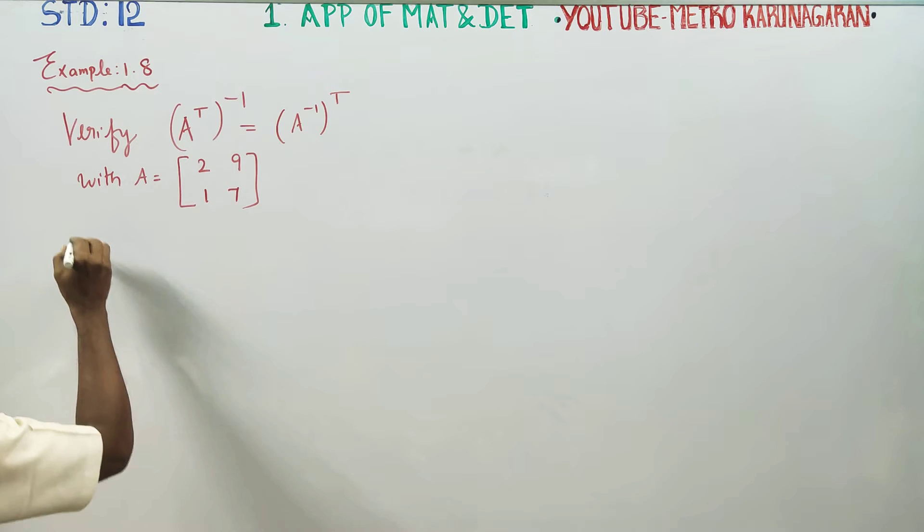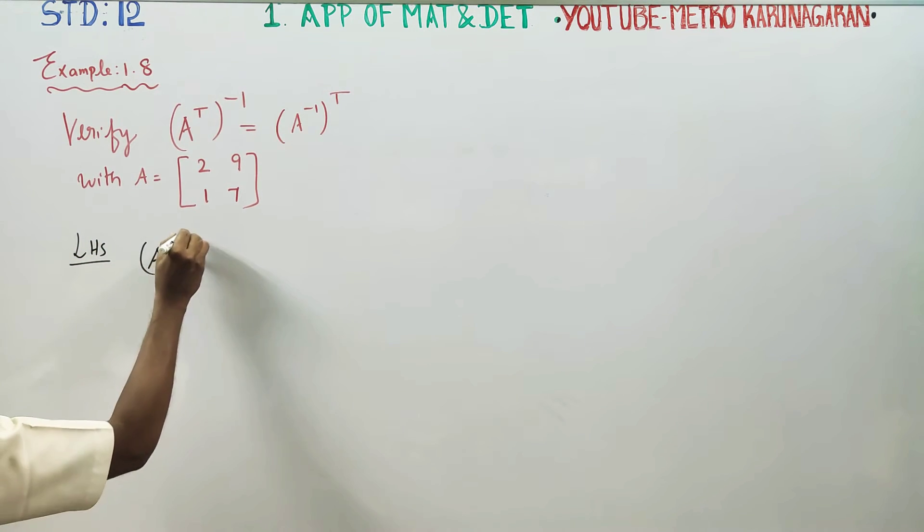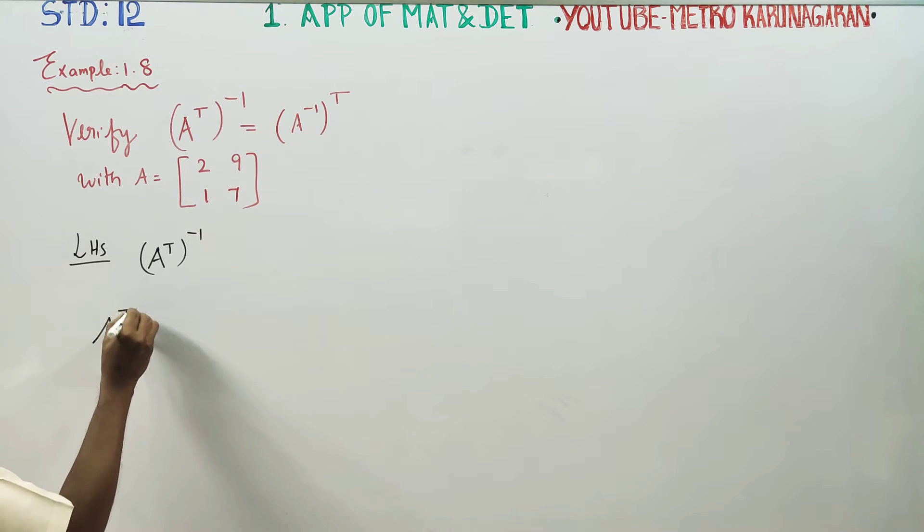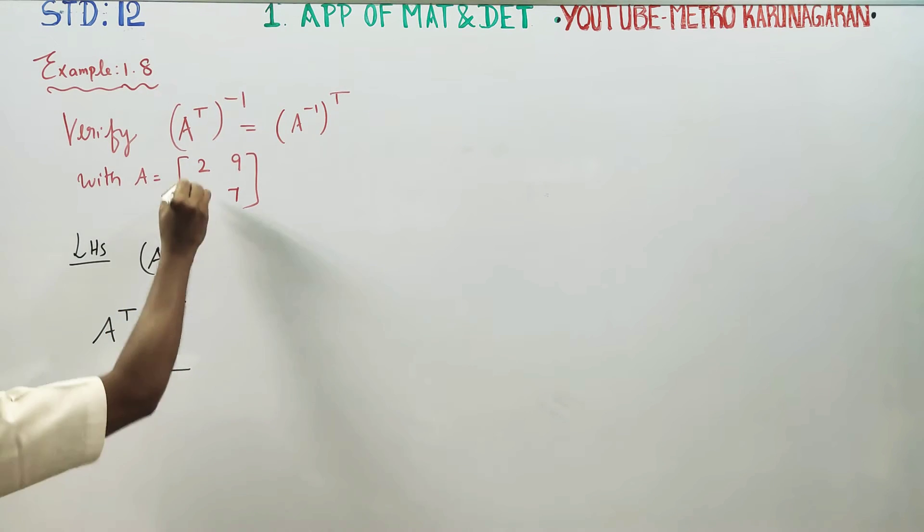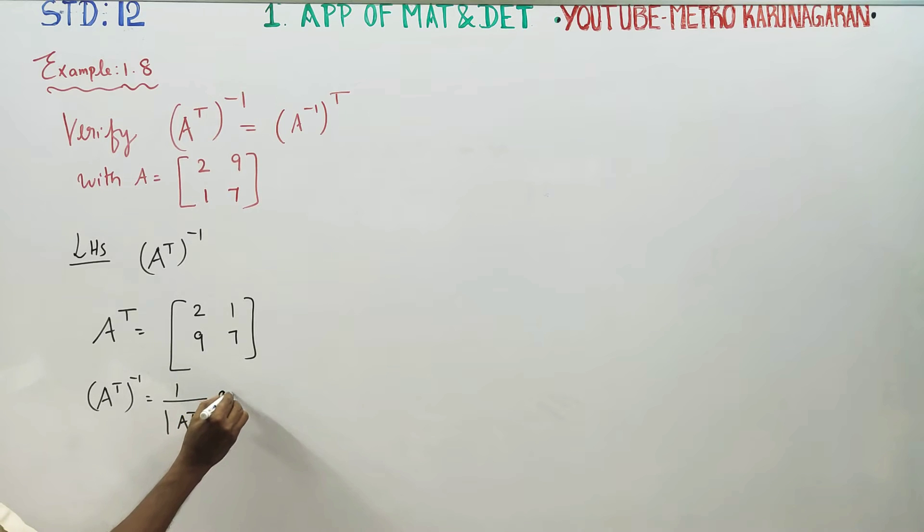First of all, I am going to start my LHS. My LHS is A transpose whole inverse. First of all, I will start with my A transpose. A transpose is now, rows are columns, it becomes my A transpose. It is inverse. A transpose inverse formula is now, 1 by determinant of A transpose, adjoint of A transpose. Am I right?